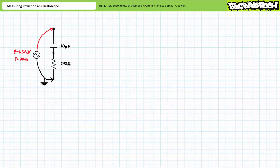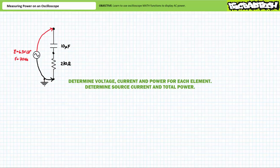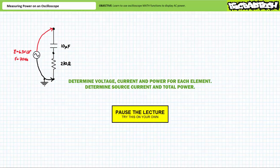So we have a basis of comparison for the practical portion of this lecture. Solve for the voltage drop across each element, the current through each element, the apparent real and reactive power delivered to each element, the source current, and the total apparent real and reactive power delivered to the complete circuit. By all means, pause the lecture and try this on your own. If you're tracking, you should obtain the following results.